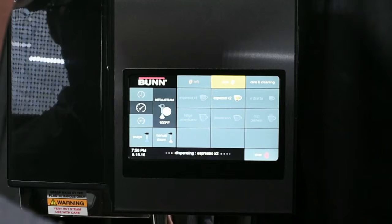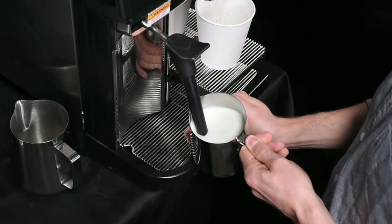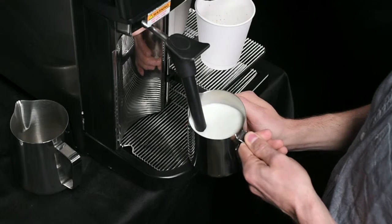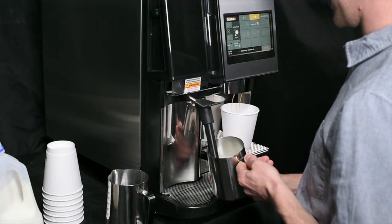Once the milk temperature reaches around 100 degrees Fahrenheit, plunge the steam tip deeper into the pitcher to stop adding air. At this point, you are heating and finalizing the texture of your milk.